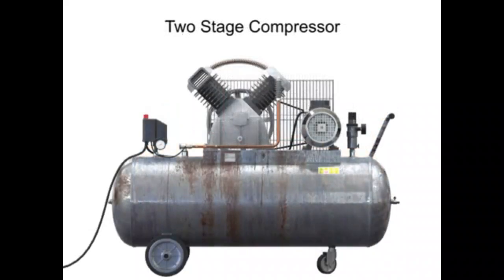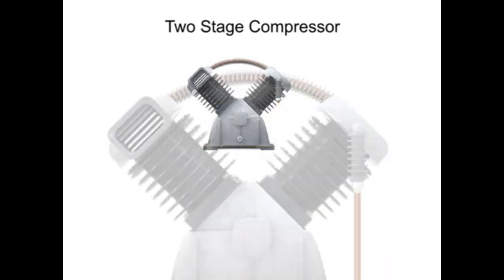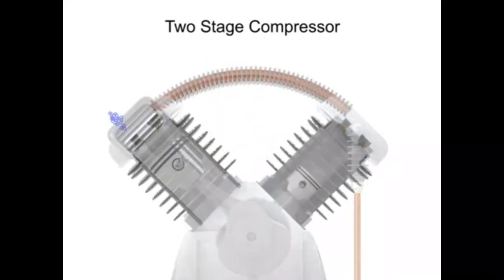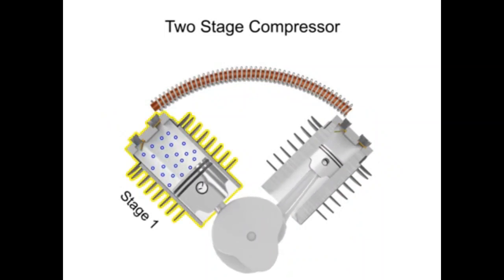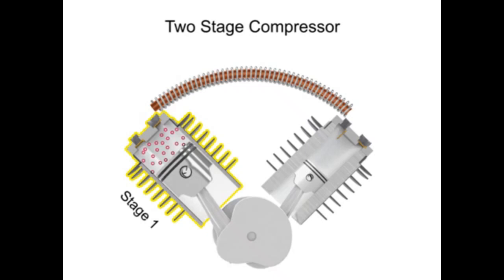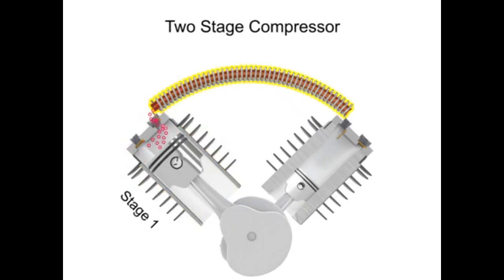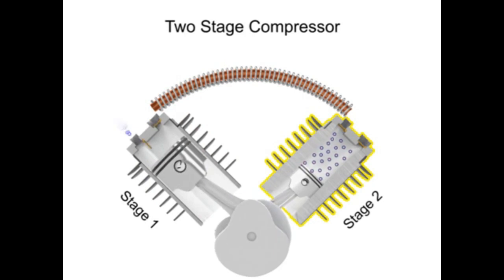To avoid the hazards of overheating and still generate higher pressures, manufacturers make compressors with multiple stages. The air is compressed in the first stage, which is typically the largest stage, then cooled, then compressed in a second stage.